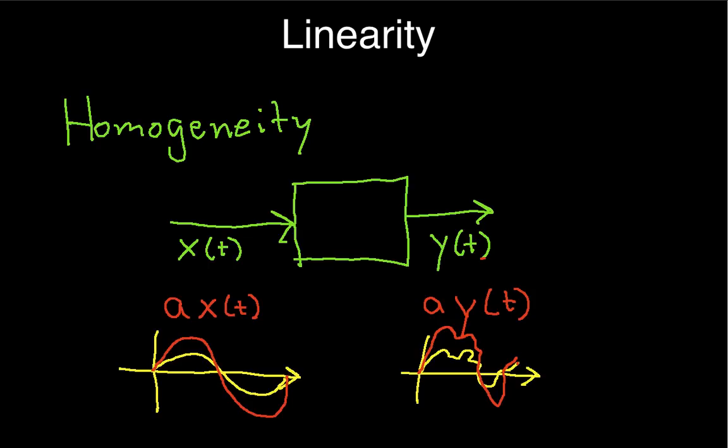The idea hopefully makes sense. The idea is that a system is homogeneous if you scale the input and that leads to scaling the output. So that's the first condition that has to be met in order for a system to be linear.